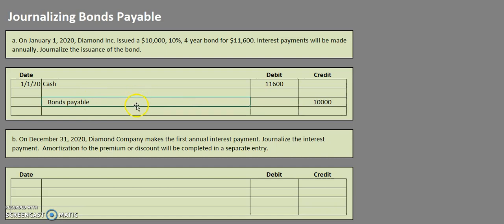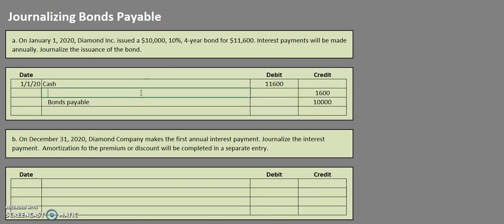I skipped a line to determine whether this was a discount or a premium. Our credit side is a little short, so I'm going to put that $1,600 on the credit side. This $1,600 and $10,000 now equals our debits. Since we issued the bond for $11,600 and the face value is $10,000, this is a premium. So we're going to credit premium on bonds payable for $1,600, since we got more money than the face value of the bond.